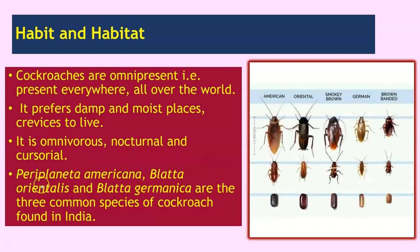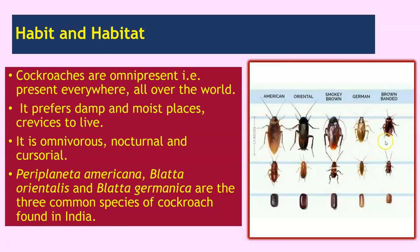We have Periplaneta americana, Blatta orientalis, and Blatta germanica. These are the three common species of cockroaches found in India. In this image you can see these different types of species — the differences in their morphology are clearly visible.